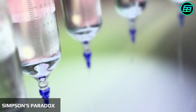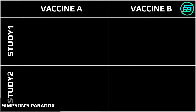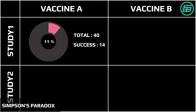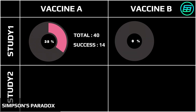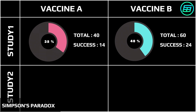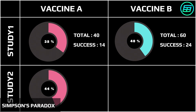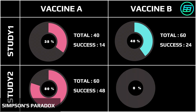What is Simpson's Paradox? Let's look at an example in vaccine research. In the first study, vaccine A was tested on 40 people and found to be effective in 14 cases, giving a success rate of 35%. Vaccine B was tested on 60 people and found to be effective in 24 cases, giving a success rate of 40%. In the second study, vaccine A was tested on 60 people and was effective in 48 cases, for a success rate of 80%.